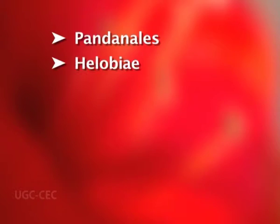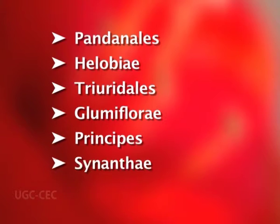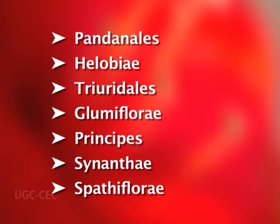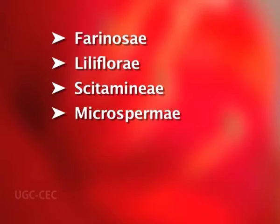The 11 orders of Monocotyledony are: Pandanales, Helobiae, Triuridales, Glumiflorae, Principes, Synanthae, Spathiflorae, Farinosae, Liliiflorae, Scitamineae, and Microspermae.